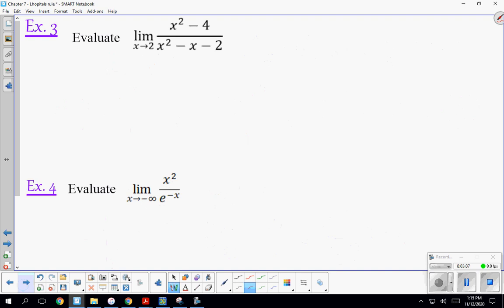Example 3 is an example where before we used the method of factoring, and that still works. But if you try direct substitution, and if I plug 2 in there, I'll get 4 minus 4 in the numerator.